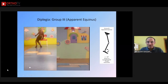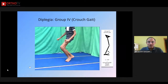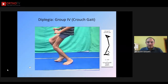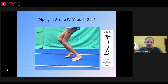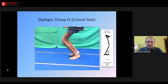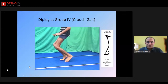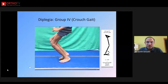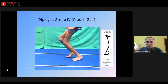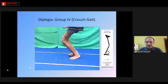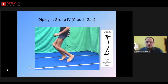You must make a distinction between group 2 and group 3 gait patterns. Crouch gait — group four — is a very classic pattern where you have excessive dorsiflexion at the ankle, sometimes associated with planus and valgus deformity of the foot, combined with excessive hip and knee flexion.